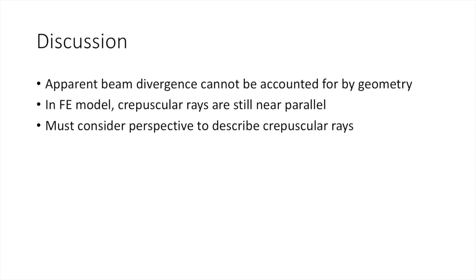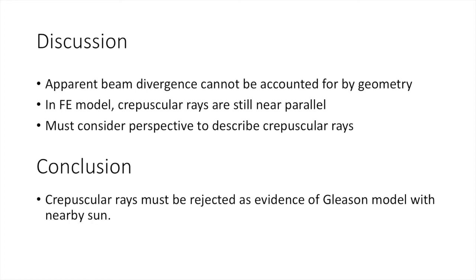In the Gleason model where the sun is close, crepuscular rays are near parallel. The apparent beam divergence is most likely to be accounted for by perspective. From this, we conclude that crepuscular rays must be rejected as evidence that the sun is close to the earth, or at least as close as the Gleason model suggests. I'm not saying that crepuscular rays are evidence of a spherical earth, but they sure as shit are not evidence of a flat earth with a nearby sun either.